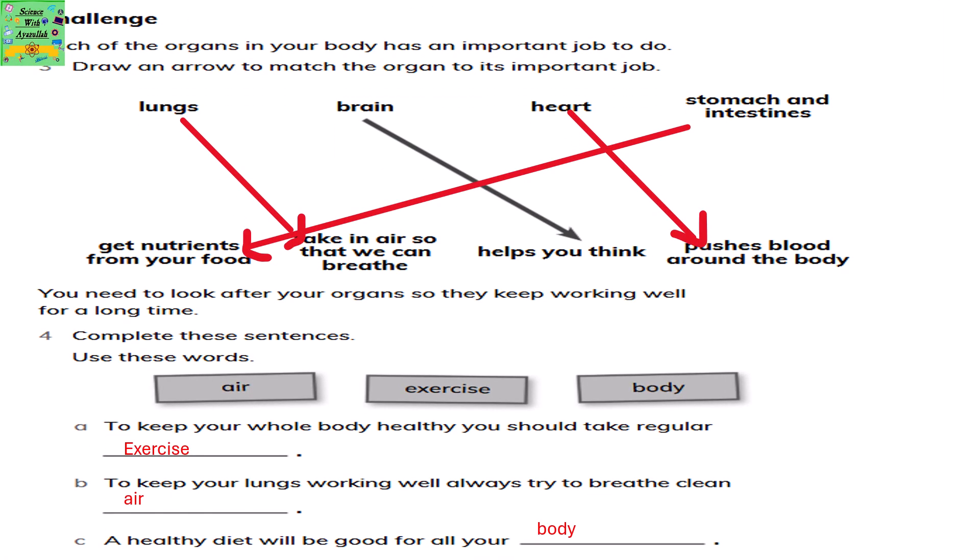Each of the organs in your body has an important job to do. Draw an arrow to match the organ to its important job. Lungs take in air so that we can breathe. Stomach and intestines get nutrients from your food. Brain helps you think. Heart pushes blood around the body. You need to look after your organs so that they keep working well for a long time.